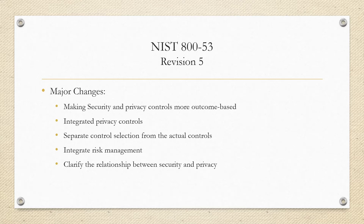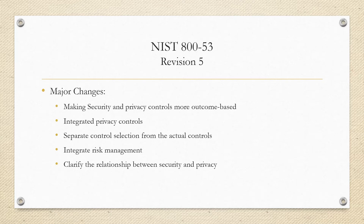They also separated the control selection from the actual controls. Having a consolidated, stand-alone control catalog allows it to be used by different communities of interest like system engineers, architects, and software developers. They can now better collaborate on points of intersection and use an individualized process for achieving their specific controls and the outcomes associated with them. This allows specific teams and divisions within your organization to focus on their individual mission and business needs.